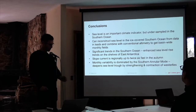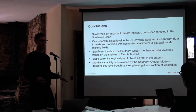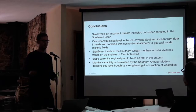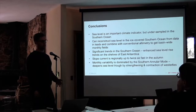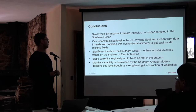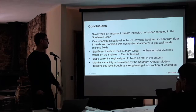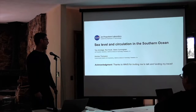Just in conclusions — sea level is an important climate indicator. We've constructed a new record in the Southern Ocean, in the ice-covered portions of the Southern Ocean. We see significant trends, in particular enhanced sea level rise adjacent to the coast of Antarctica, which people have linked to melt water or possibly winds. The slope current varies regionally and seasonally quite a lot. Monthly variability of sea surface height is really driven by variations in the SAM, which deepens the sea level drop by contracting and strengthening the westerlies. Thanks to NASA for funding.